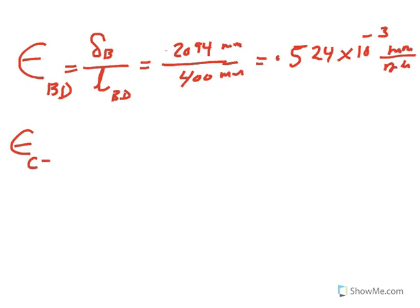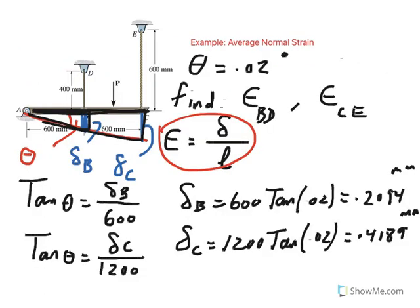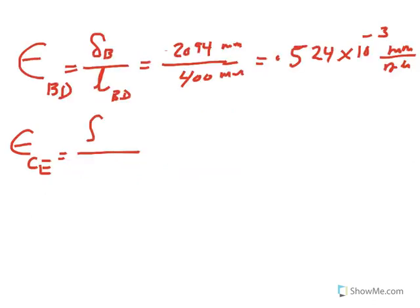And similarly, epsilon CE would be then how much the wire CE has stretched, which is delta C, divided by the length of CE.